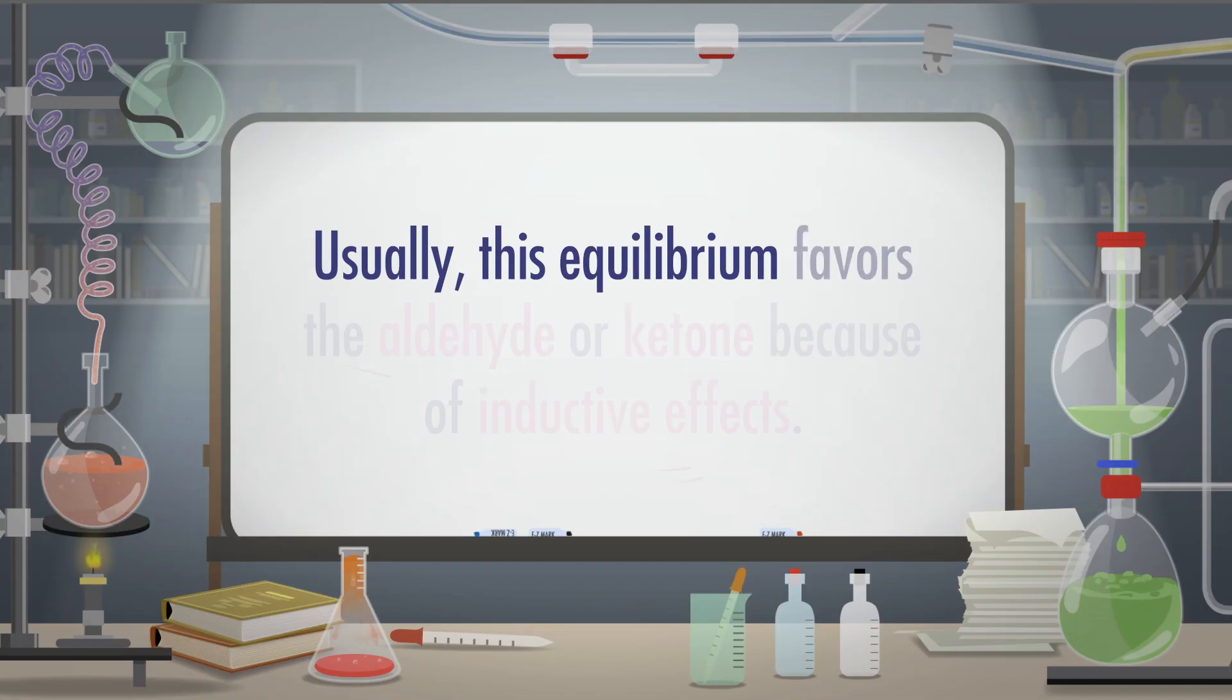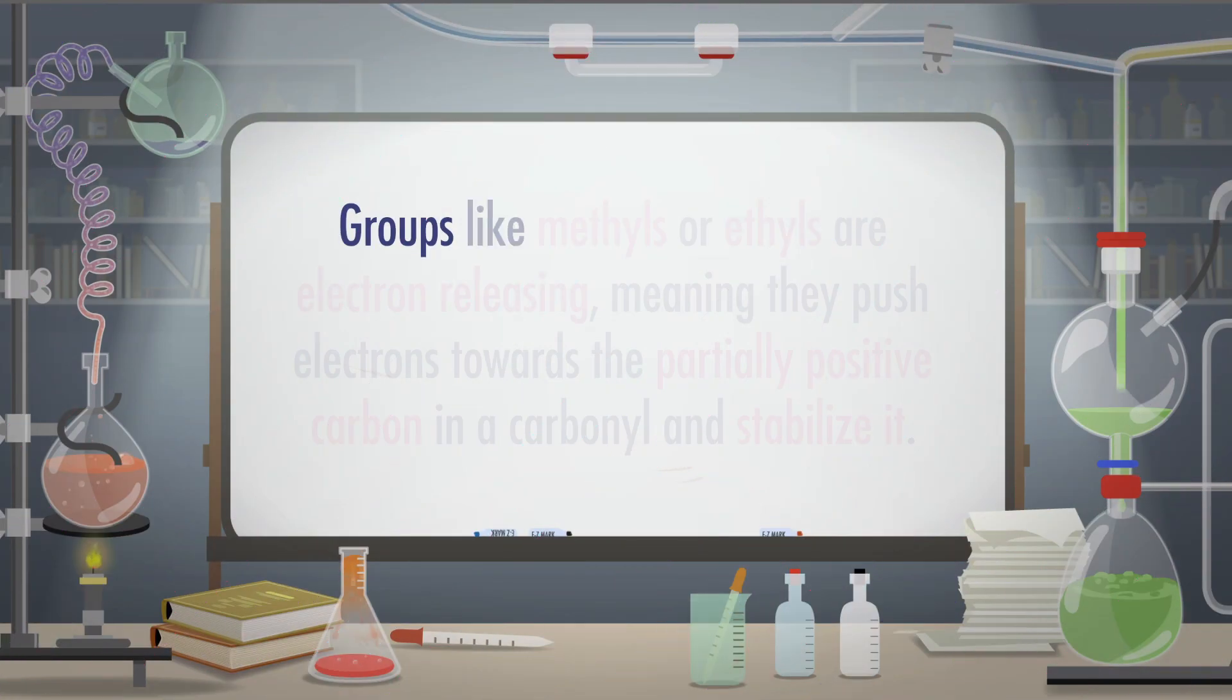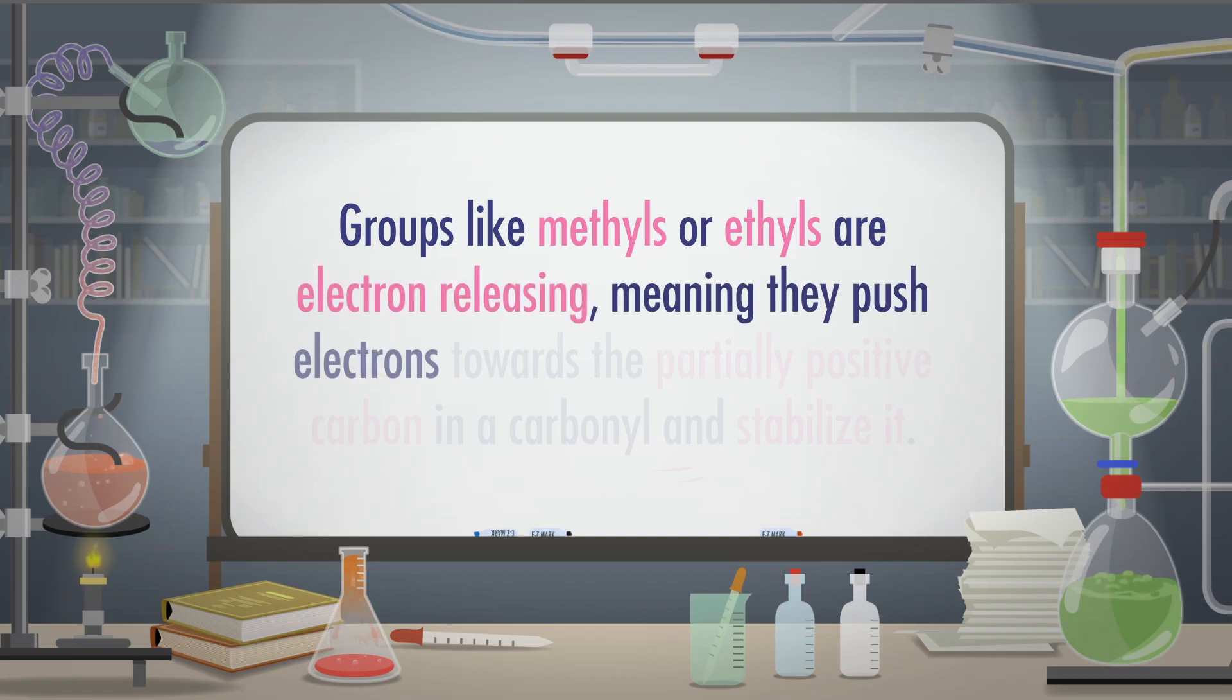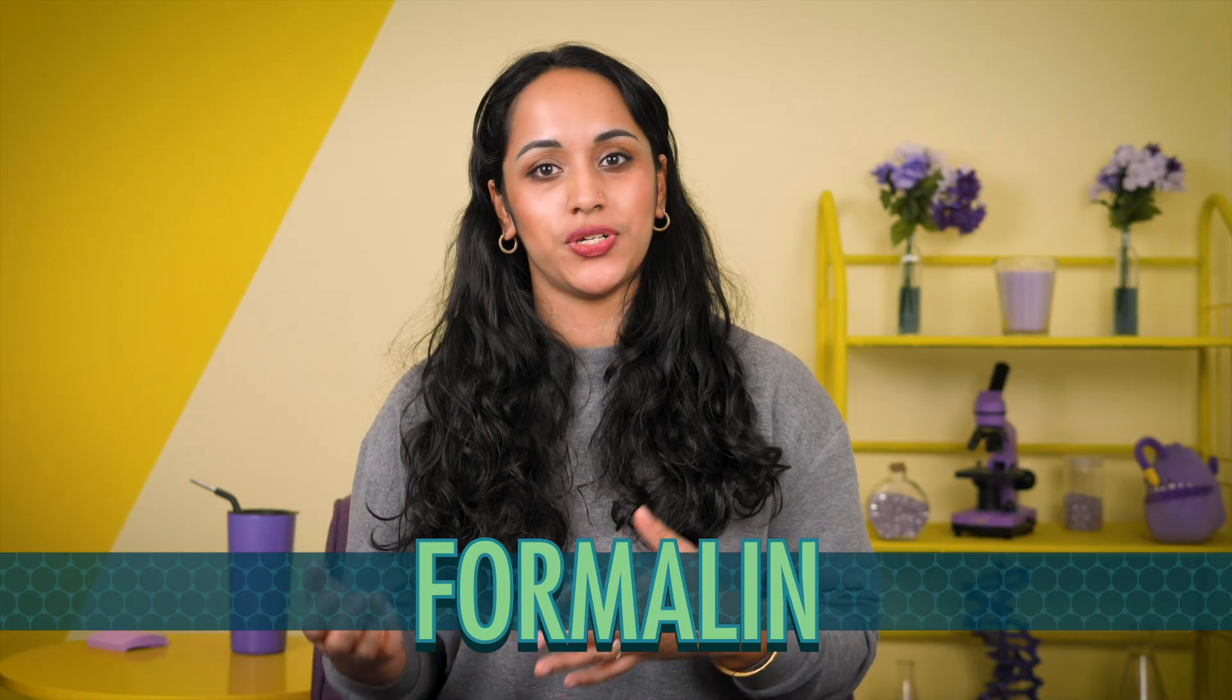Usually, this equilibrium favors the aldehyde or ketone because of inductive effects. Groups like methyls or ethyls are electron-releasing, meaning they push electrons towards the partially positive carbon in a carbonyl, and stabilize it. There are examples that break this pattern, though, like the smallest aldehyde, formaldehyde. Mixing water with formaldehyde produces a solution called formalin. Formalin helps preserve tissues from decay, so it's what scientists use to preserve tissue specimens in jars.